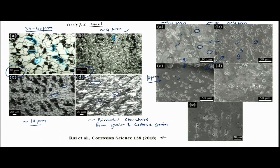Similarly, the bimodal structure also showed pits, but some of those pits are much larger than in the other two cases. If we reduce the grain size, the number of grain boundaries or the volume fraction of grain boundary will go up. Since the grain boundary is the active zone, the possibility of pitting goes up. That is exactly what happened.